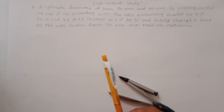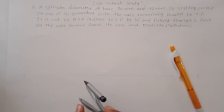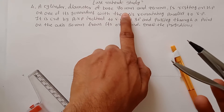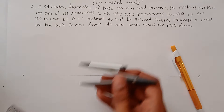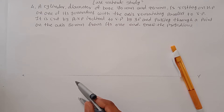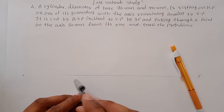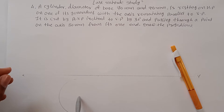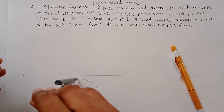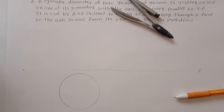First, draw the initial position. Since 70mm is the diameter, measure 35mm (3.5 cm) to draw the front view circle. This gives us the front view.